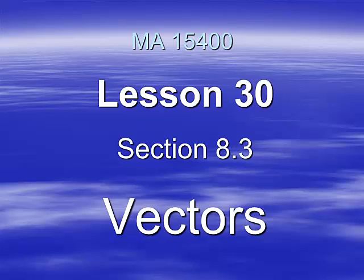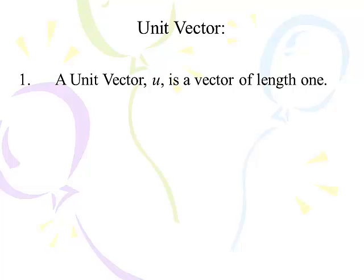Let's get going with lesson 30. This is our third out of five lessons on section 8.3 vectors. So what's a unit vector? A unit vector is a vector of length 1, and there's an infinite number of unit vectors. We will either ask for the unit vector in the same direction as a given vector, or a unit vector in the opposite direction of a given vector.